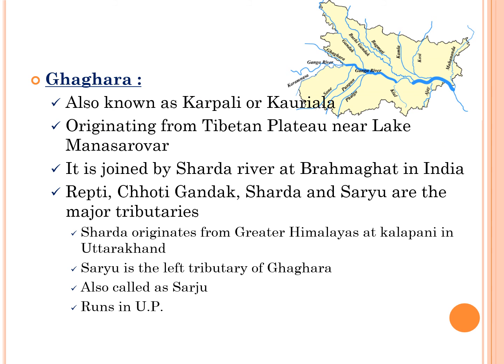The next left tributary of Ganga river is Ghagra river, also known as Karnali or Kauriala. It is a transboundary perennial river originating from the Tibetan plateau near Lake Manasarovar. Ghagra cuts through the Himalayas in Nepal and is joined by the Sharda river at Brahmaghat in India. Rapti, Choti Gandak, Sharda, and Sarju are the major tributaries of Ghagra river. The Sharda river originates from the Greater Himalayas at Kalapani in Uttarakhand. Sarju river is the left tributary of Ghagra and runs in Uttar Pradesh state.